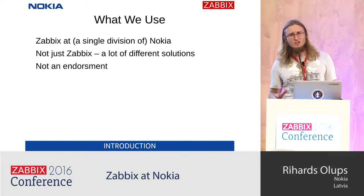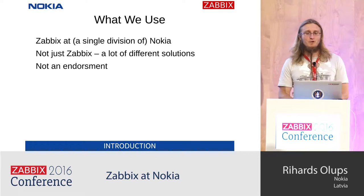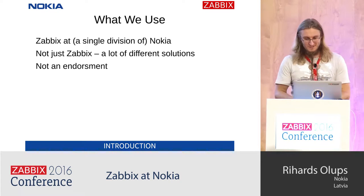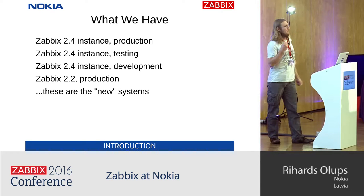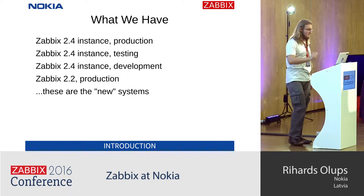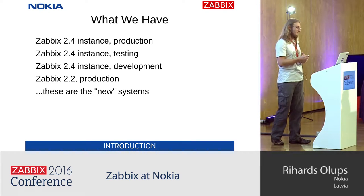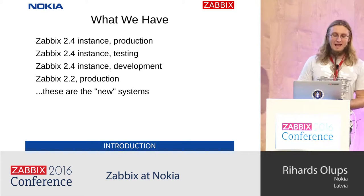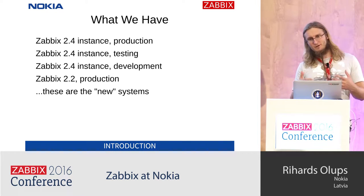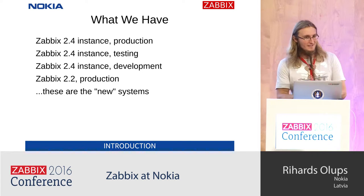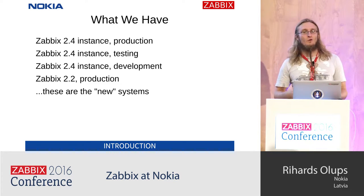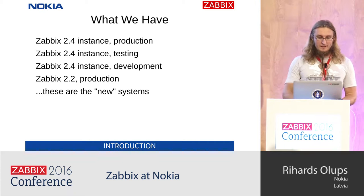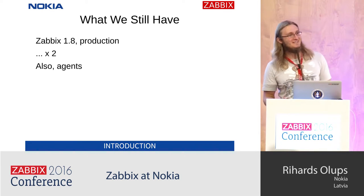We use a lot of different solutions. Even in this division we use several monitoring products — I have to add this is not an endorsement. Briefly on what we have currently: we don't have 3.0, we have 2.4 as a production instance. We also have a testing instance of 2.4 and yet another 2.4 instance for development. As we have several environments, we also have another 2.2 instance which is also production. Those are the new systems. And we also have Zabbix 1.8 still in production.